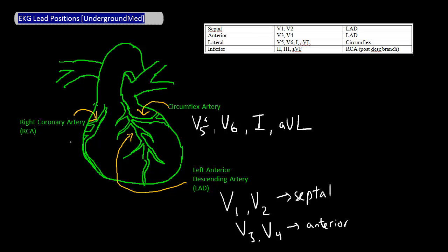The remaining leads, which are all inferior leads, are leads 2, 3, and AVF. Most people say these are within the territory of the right coronary artery, which is true, but it's actually a little more precise to say they are within the territory of the posterior descending branch of the right coronary artery, which is right here.